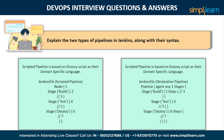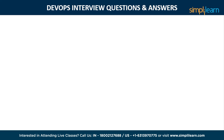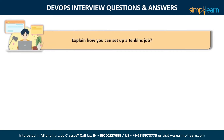The declarative pipeline provides a simple and friendly syntax to define a pipeline. Here, the pipeline block defines the work done throughout the pipeline. The syntax follows a similar structure: execute the pipeline or any of its stages on any available agent, define the build stage and perform steps related to the build stage, define the test stage and perform steps related to the test stage, and define the deploy stage and perform steps related to the deploy stage.